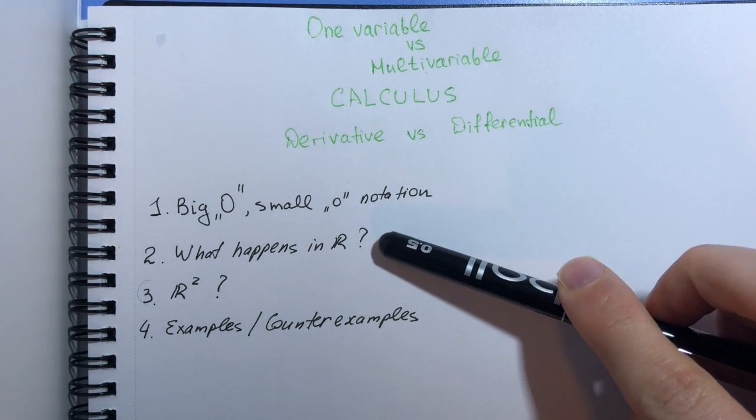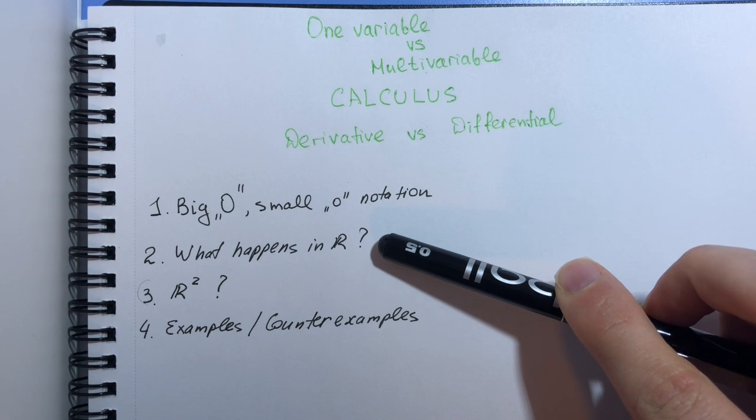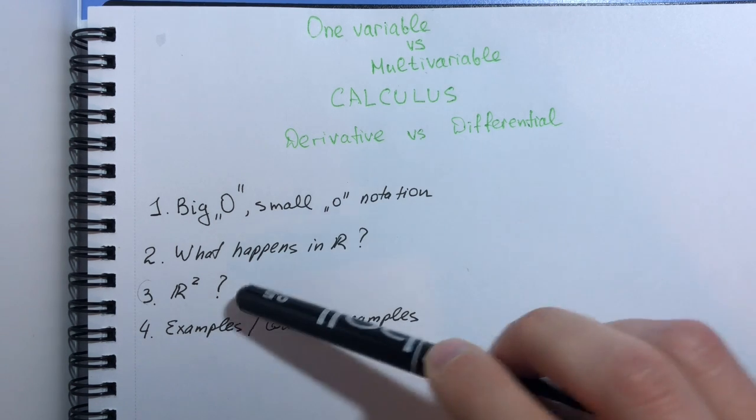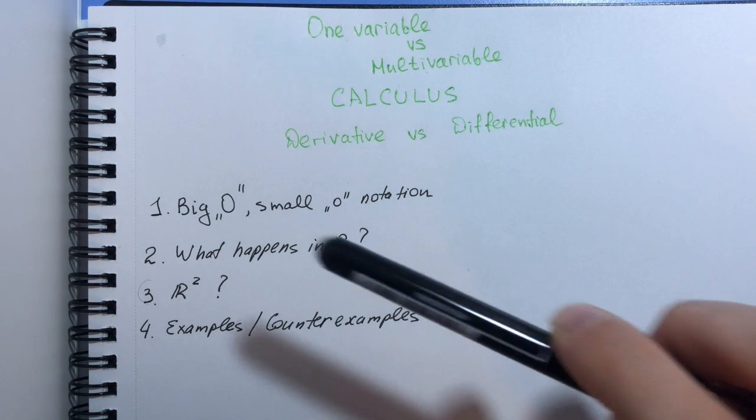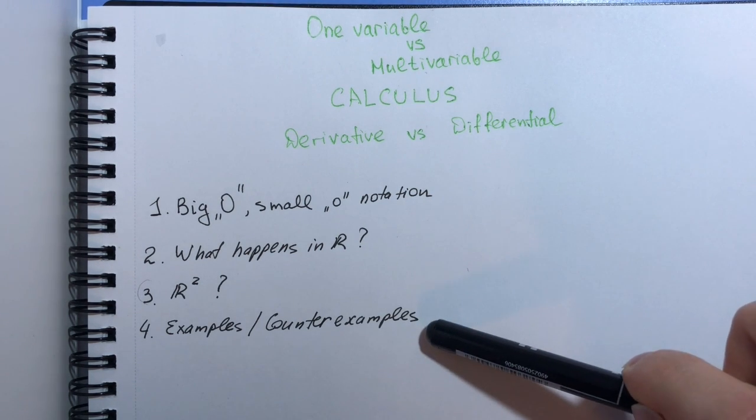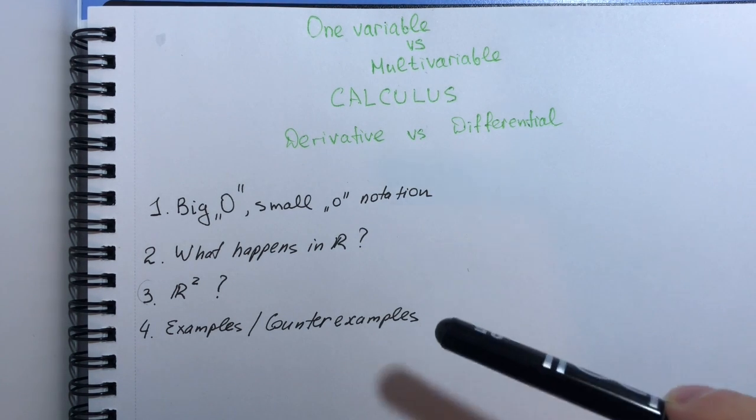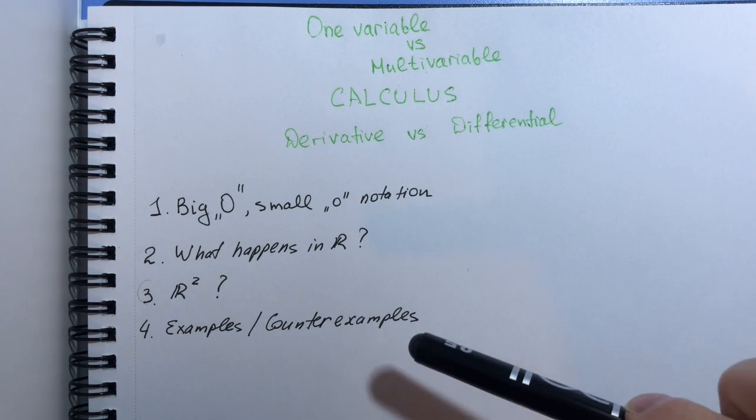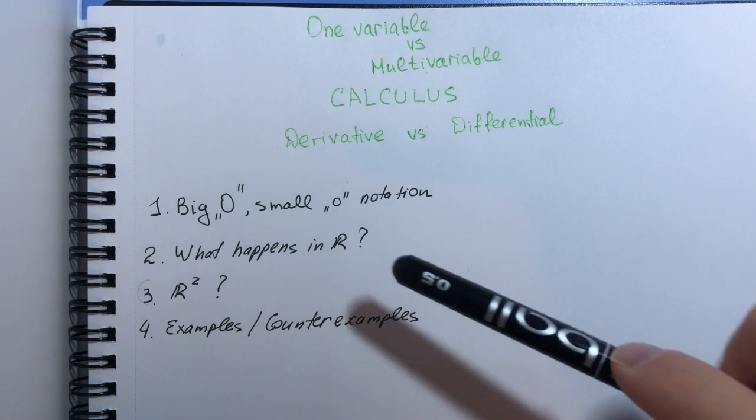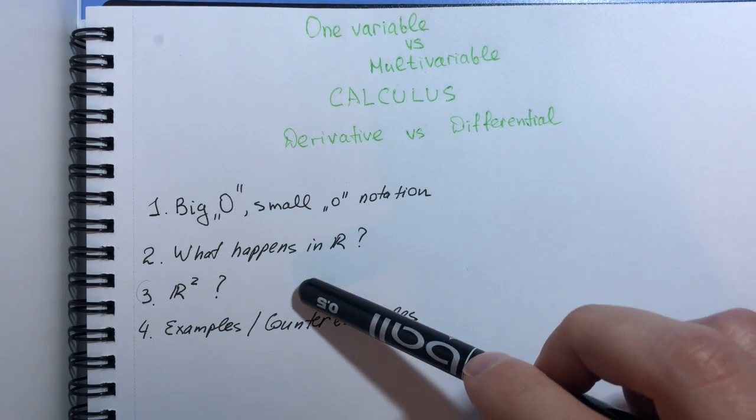I would then look at differentials and derivatives in one variable, see how they get transported to many variables, or two variables in my case, and then we will discuss some examples and counterexamples of functions that prove or disprove certain theorems that we'll be proving in part 2 and 3.